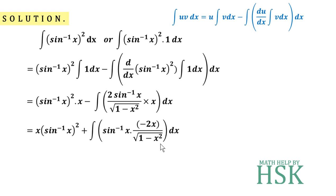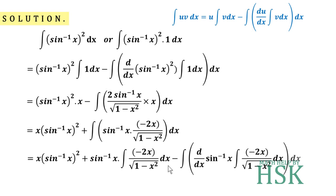So this term stays as is, and here we apply the formula. This will be equal to sin⁻¹x times the integration of −2x/√(1−x²), minus d/dx of sin⁻¹x times the integration of −2x/√(1−x²) dx, and further the integration of the product.